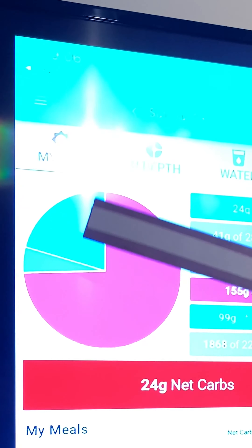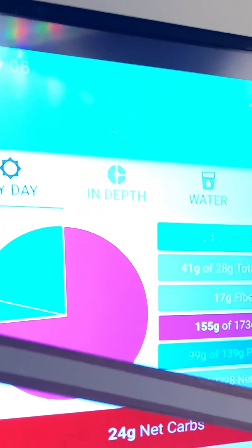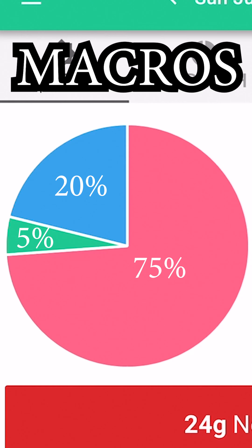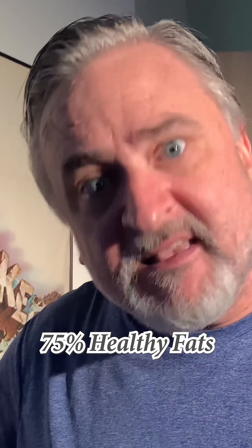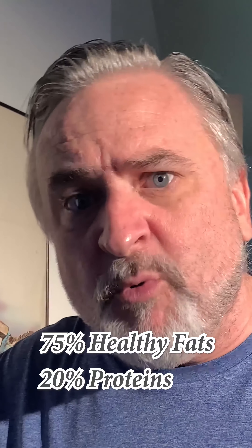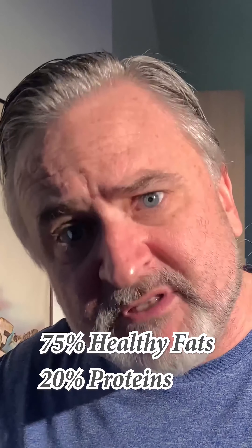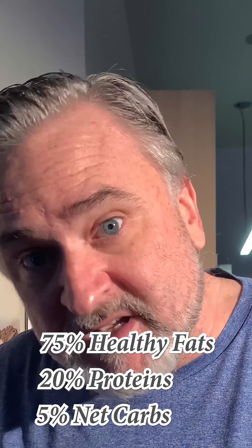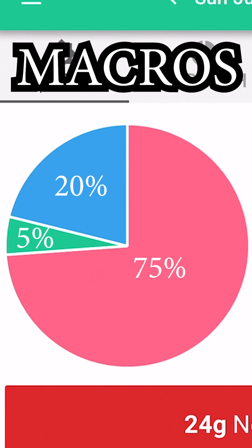Macros are the fats, proteins, and net carbs. The entire pie chart is going to be 75% healthy fats, 20% proteins, and 5% net carbs. Those are your macros. Once you enter your foods, you'll see how it all adds up for your daily allowance.